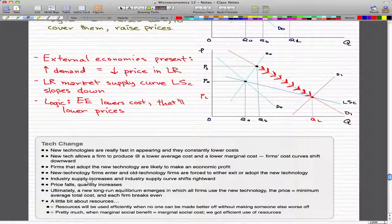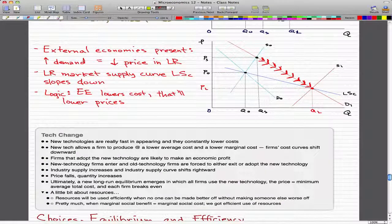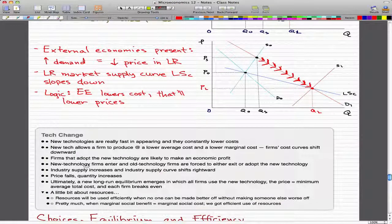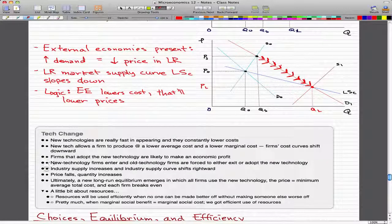Firms that adopt a new technology are likely to make an economic profit. New technology firms enter, and old technology firms are left with a couple of choices. They are forced to exit, or they are forced to adopt the new technology. Industry supply increases, and the industry supply curve shifts rightward, ultimately. And price also falls, and quantity increases.